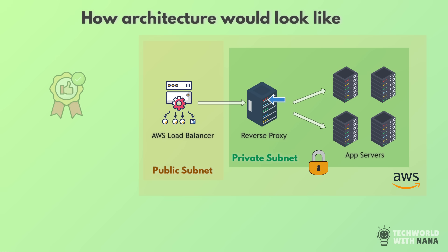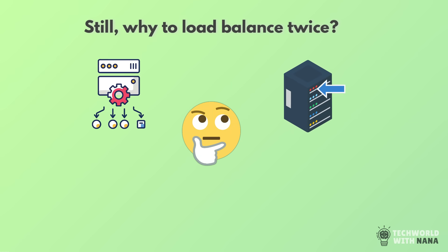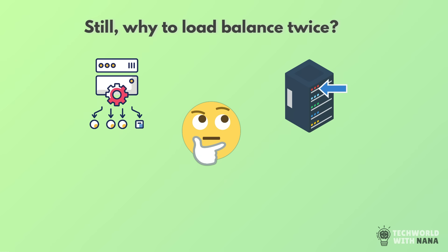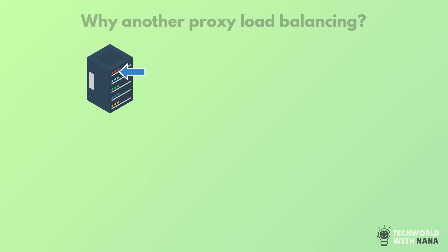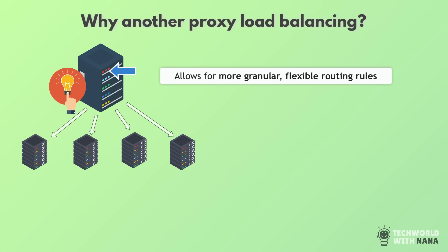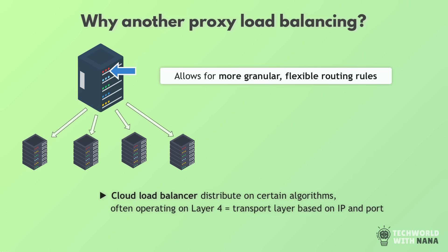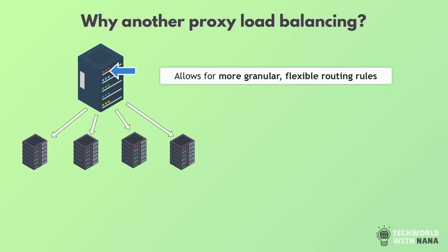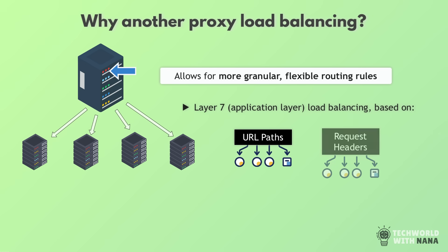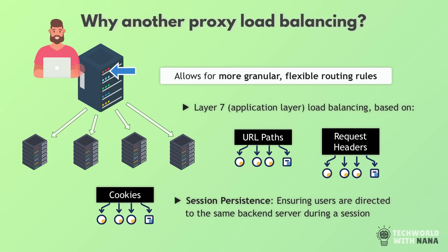You may ask: why do I need to load balance twice on multiple levels? Why do I need a proxy inside if I have load balancing outside? Reverse proxy actually has more intelligent, fine-grained load balancing, which allows much more intelligent routing to the web servers. While cloud load balancers distribute traffic based on simple algorithms — like whoever is the least busy — on a reverse proxy you can configure more advanced routing logic based on headers, cookies, or session data. For example, you can decide that all requests from the same user always go to the same web server by checking the associated session data or cookies and forwarding the same client requests to the same server.